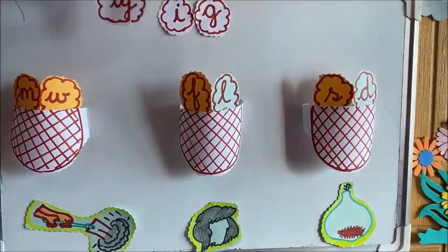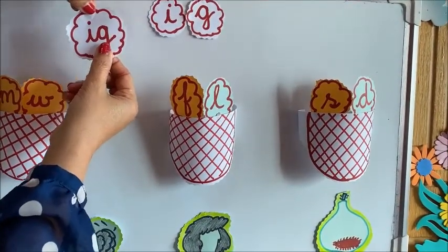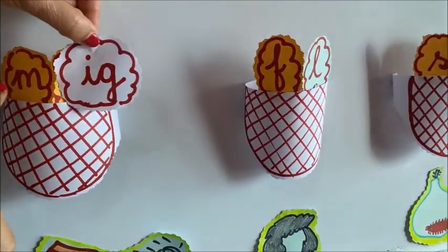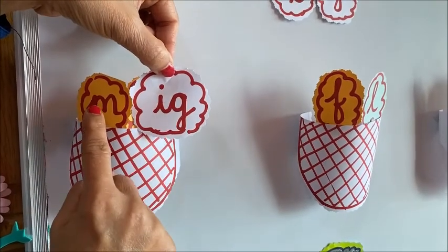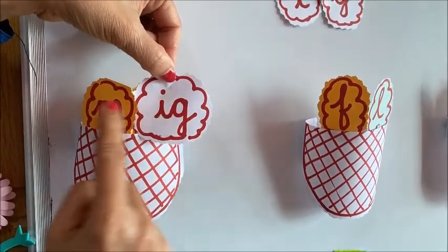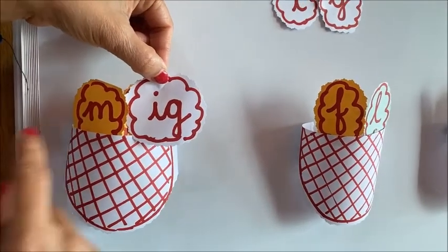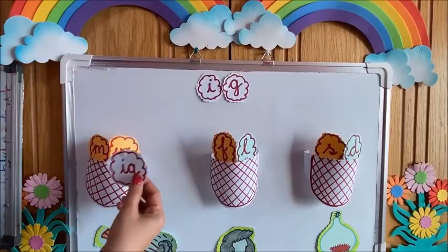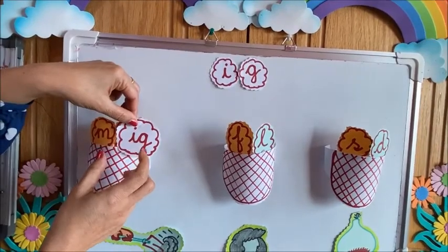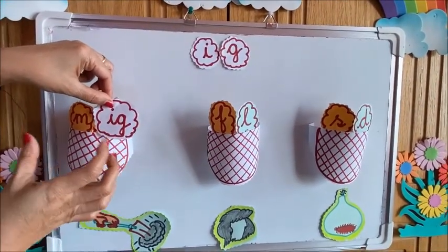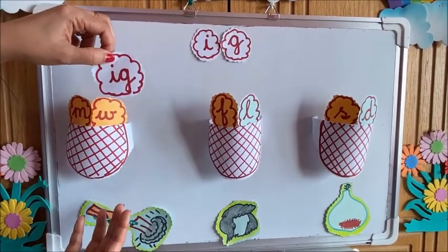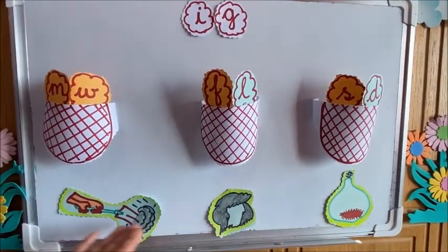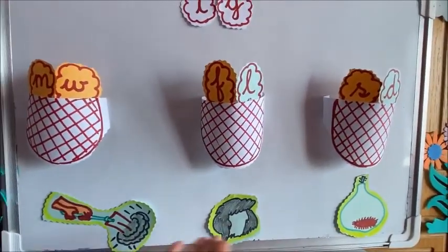First, IG will go near M and try to form a word. Muh-IG is 'mig'. Is there any meaning for this three-letter word? There is no meaning and there is no picture of 'mig' here. So M and IG together give no proper meaning. M cannot be of any help.